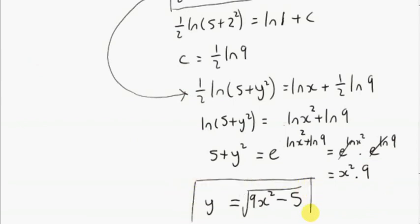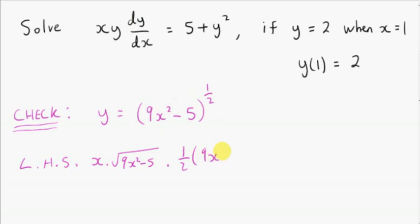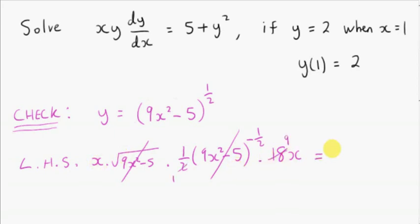So here's our solution. Let's just do a quick check. Let's take the left-hand side of the differential equation — that's x times y. We plug in our expression for y times dy/dx. We just use the chain rule here. We deal with the power first: a half minus 1 is minus a half. Then we multiply by the derivative of what's inside the bracket — differentiating 9x squared gives us 18x. So we have 9x squared minus 5 to the power of a half, multiplied by 9x squared minus 5 to the power of minus a half, which is 9x squared minus 5 to the power of 0, which is 1. So we're left with x times 9x, which is 9x squared — that's the left-hand side.